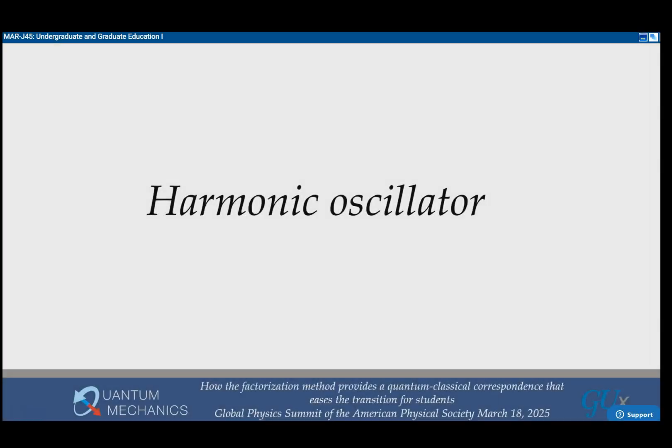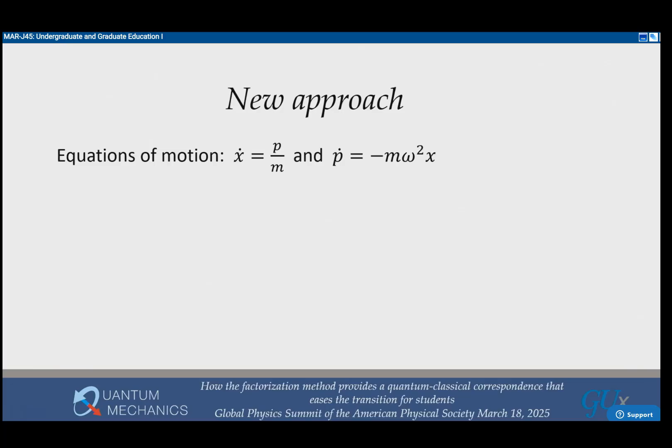I'm going to start with the harmonic oscillator, and this can be done with freshmen. Freshman physics is all that you need. These are Hamilton's equations of motion, but anyone who's taken first-year physics knows that X dot is P over M, and P dot is minus M omega squared X for a harmonic oscillator. The idea is you decouple the equations, a mathematical technique well-known for solving differential equations.